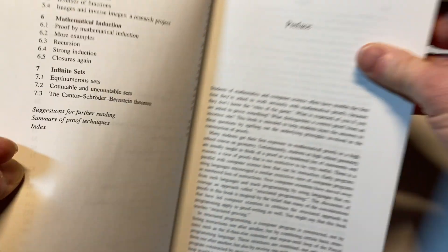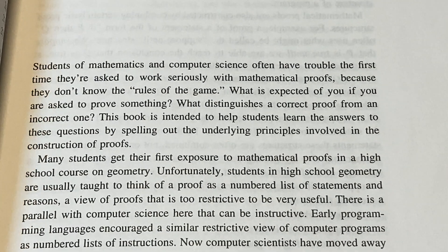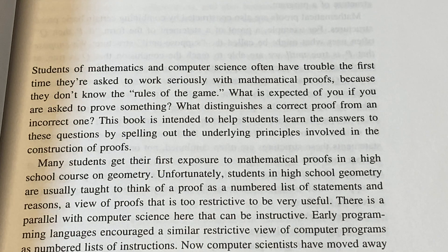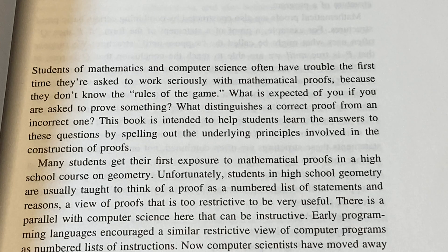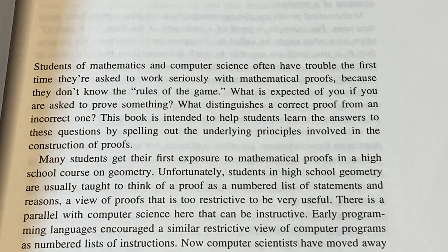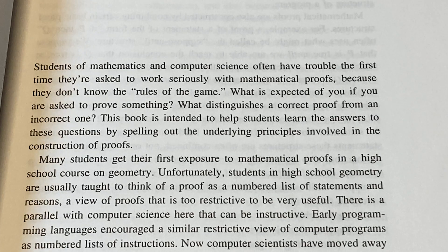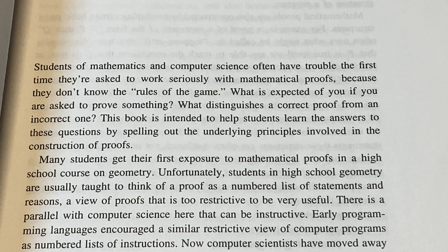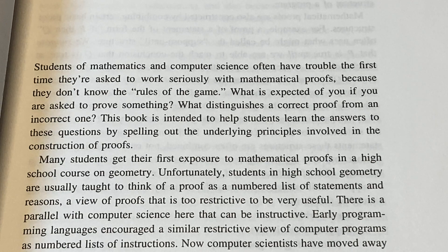All right, let's take a look at the prefaces. Let's read this here. Students of mathematics and computer science often have trouble the first time they're asked to work seriously with mathematical proofs because they don't know the rules of the game. What is expected of you if you are asked to prove something exactly? What distinguishes a correct proof from an incorrect one? This book is intended to help students learn the answers to these questions by spelling out the underlying principles involved in the construction of proofs.